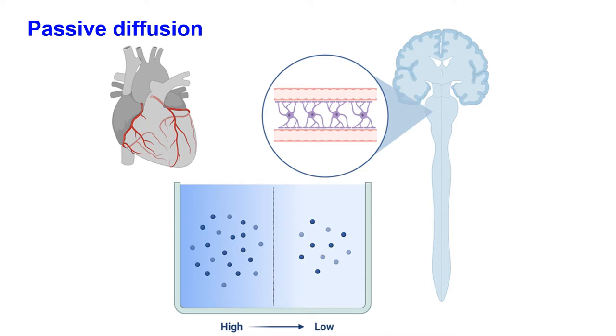The next one is passive diffusion where we know it's the movement from molecules from a low concentration to a higher concentration across a membrane. In this case, we can look at the brain, blood-brain barriers, intactness.